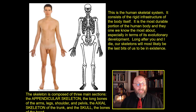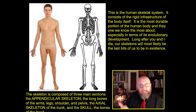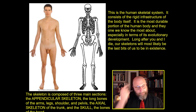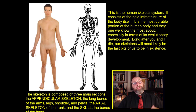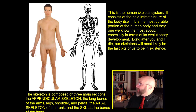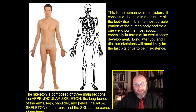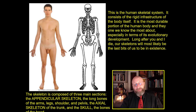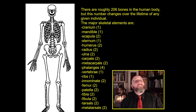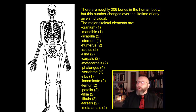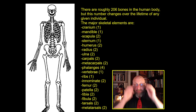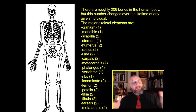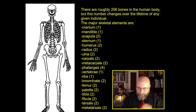The skeleton itself is basically comprised of three sections: the appendicular skeleton, the axial skeleton, and the skull. The appendicular skeleton is the long bones of the arms, legs, shoulders, and pelvis. The axial skeleton are the bones of the body's axis - the spinal column, the ribs, the sternum. There are roughly 206 bones in the human body, but this number changes over time. You're actually born with more bones, and as you age you have fewer, because different bones fuse together.